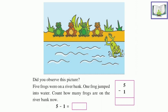So if one frog jumped into the water, count how many frogs are on the river bank now. Let's just count: one, two, three, four. Means there were five frogs, one went into the river, they were left with how many? Four. So five minus one equals to how much? Four. That's great. You can write in the horizontal and even vertical manner, five minus one equals to four.